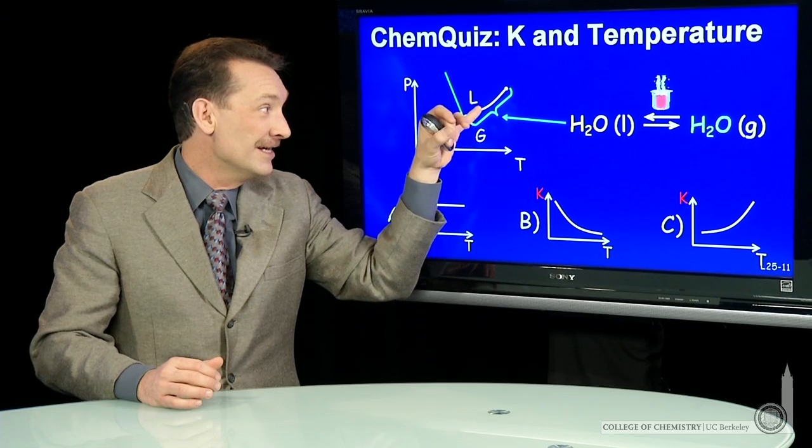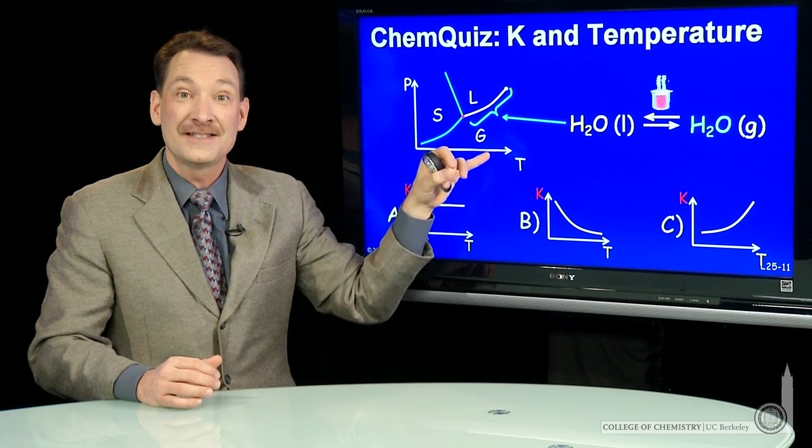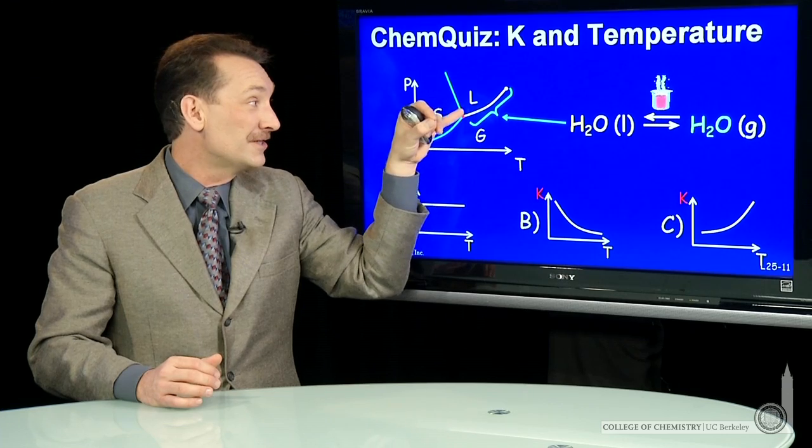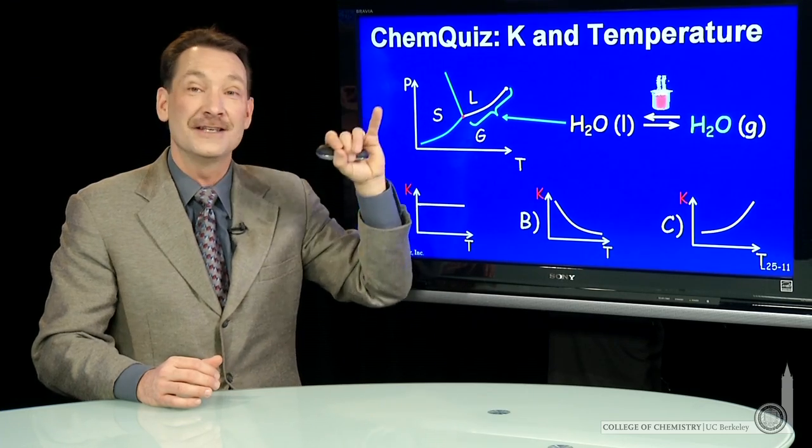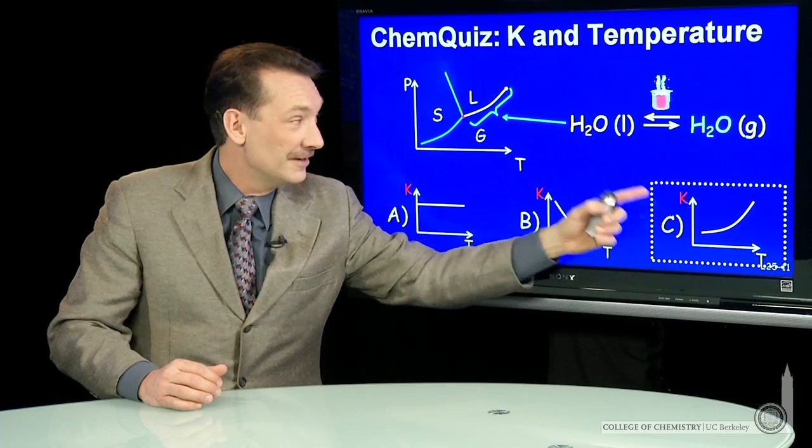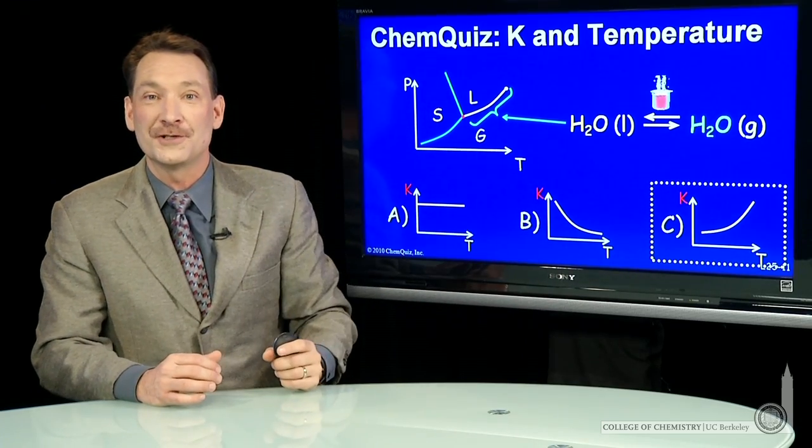So this line in the phase diagram corresponds to the equilibrium values. These are the values of the equilibrium constant with temperature. So the equilibrium constant looks just like that line as it varies with temperature.